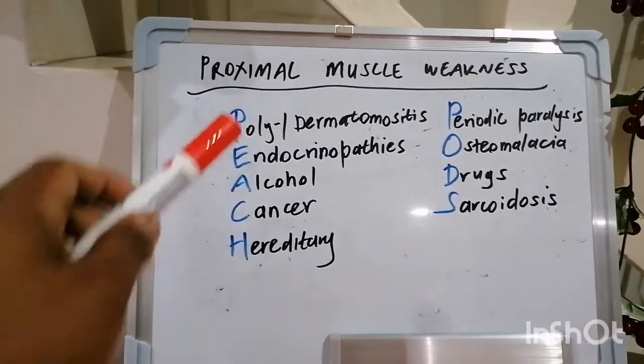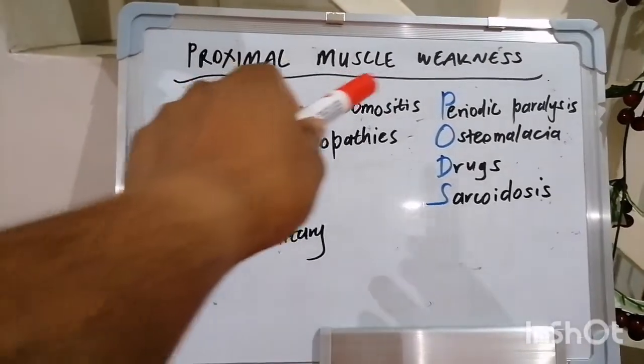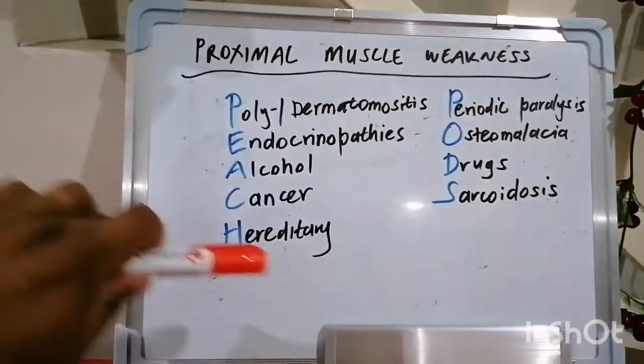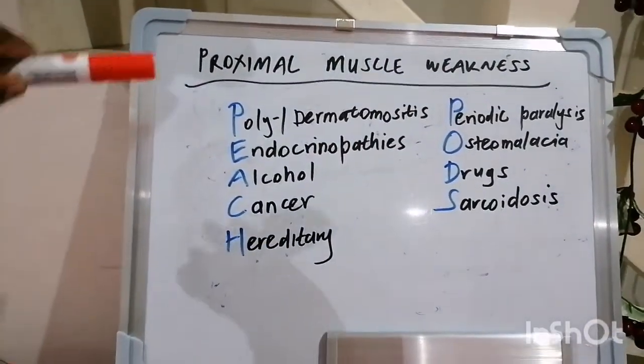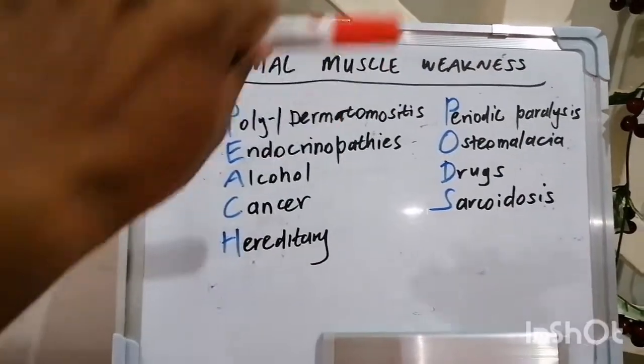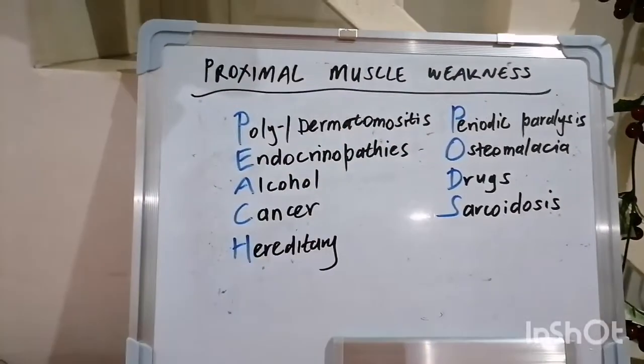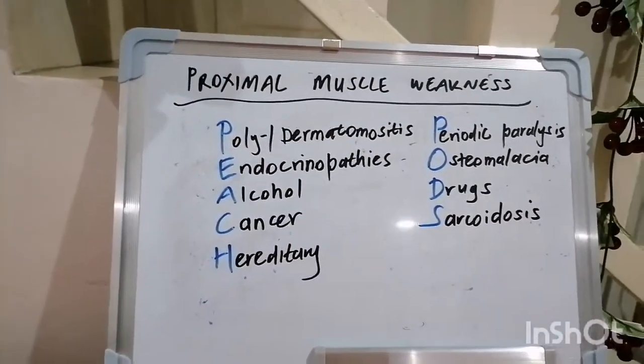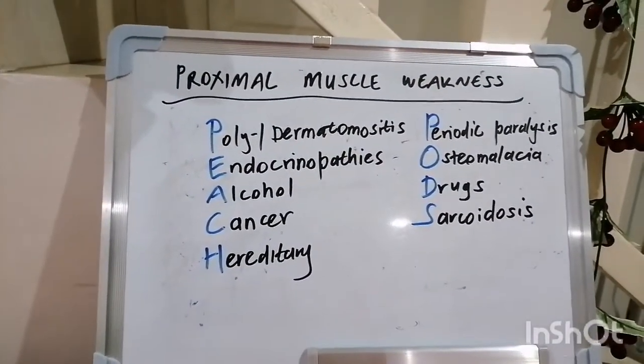Today we're talking about proximal muscle weakness, and the mnemonic is PEACH PODS. But first, allow me to favor you with a few muscle jokes.